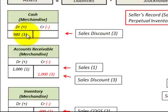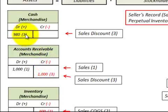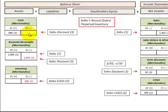The balancing account goes to cash, where we increase cash by $980. We were owed $1,000 but received $980 in cash due to the sales discount we offered.